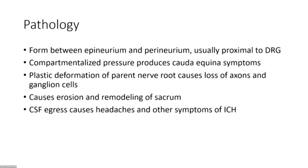It forms between the epineurium and perineurium. It's usually proximal to the dorsal root ganglion — compartmentalized pressure. Basically a compartment syndrome gets formed in the sacral canal. You get plastic deformation of the nerve root, loss of axons and ganglion cells, which Tarlov demonstrated in 1938, erosion and remodeling of the sacrum. And then you can have CSF egress.